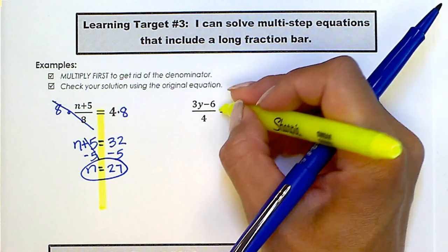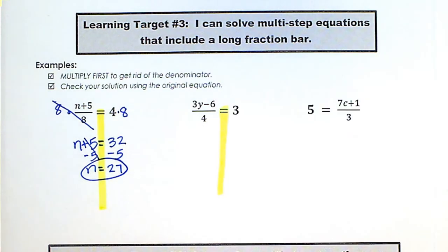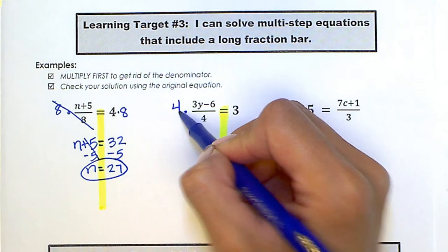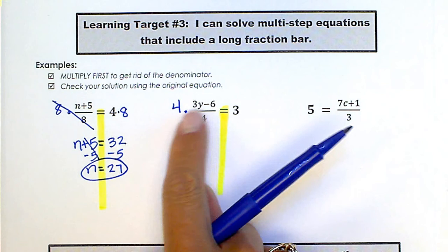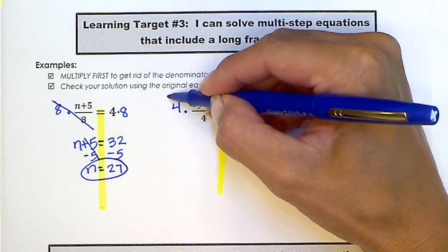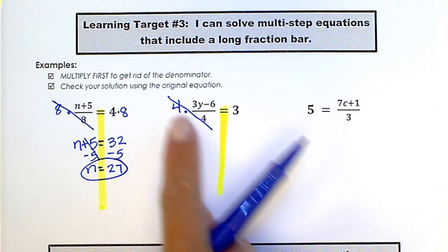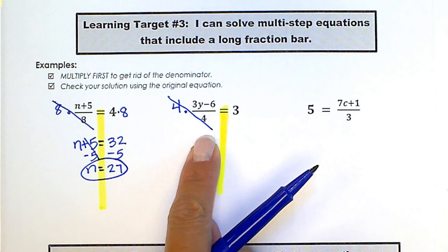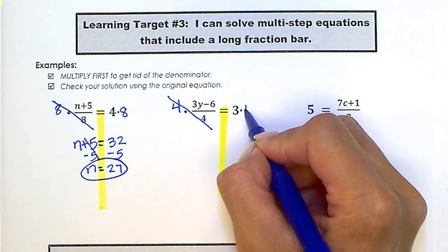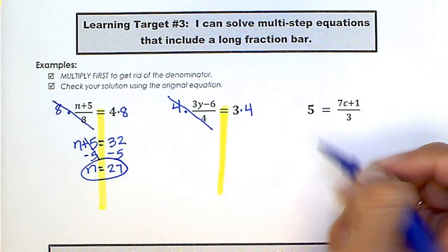When I do this times 4, I do not need to distribute, because the 4 in the numerator and 4 in the denominator are going to cancel each other out. They are inverse operations, but I have to put times 4 over here. Whatever you do to the left, you do to the right.